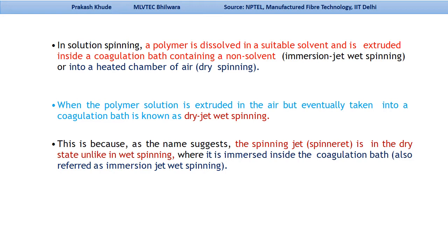In dry jet wet spinning, the polymer is extruded into the air but eventually taken into the coagulation bath. As the name suggests, the spinneret is in the dry state — unlike wet spinning systems where the spinneret is kept inside the coagulation bath. That is why it is called wet spinning.